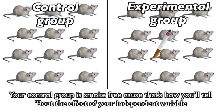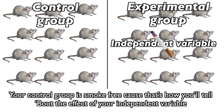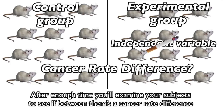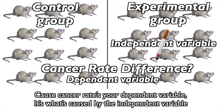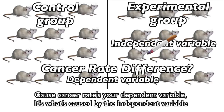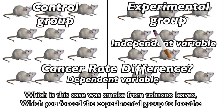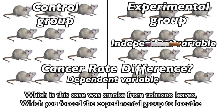Your control group is smoke-free, cause that's how you'll tell about the effect of your independent variable. After enough time, you'll examine your subjects to see if between them is the cancer rate difference. Cause cancer rate's your dependent variable — it's what's caused by the independent variable, which in this case was smoke from tobacco leaves.